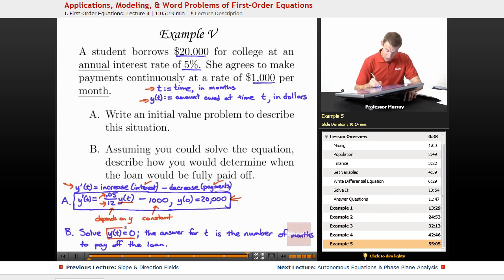So in order to do that, we set y of t is equal to 0. And then the answer, whatever we get when you solve that for t, would be the number of months to pay off the loan, because t was measured in months.